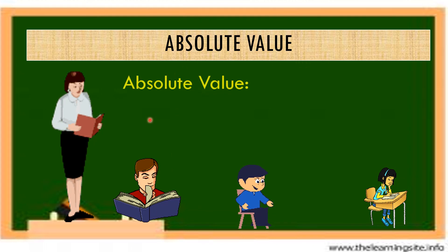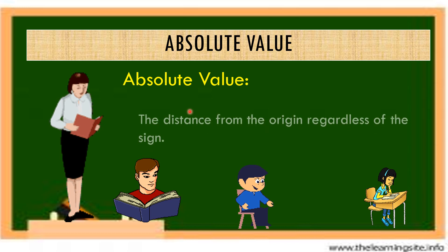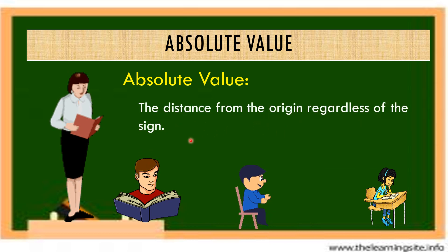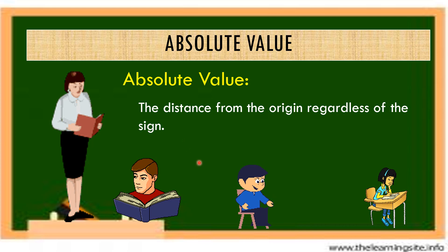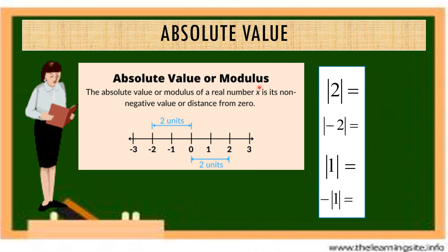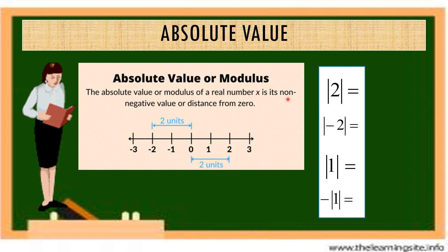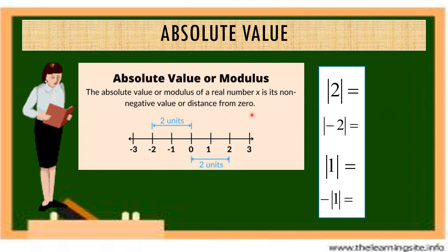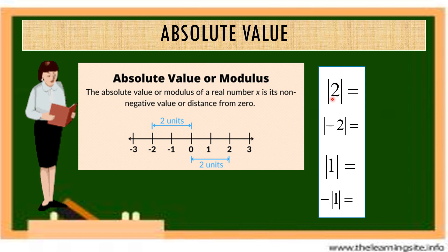Absolute value. Absolute value is defined as the distance from the origin regardless of the sign. The absolute value or modulus of a real number X is its non-negative value or distance from zero. The distance from 0 to 2 — this is the symbol for absolute value — so the absolute value of 2 is 2.